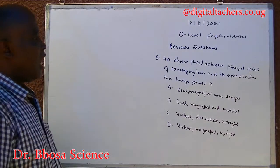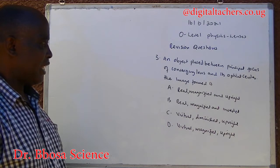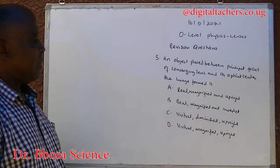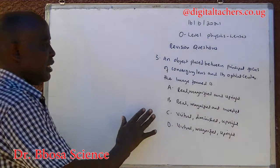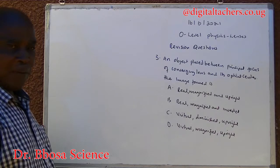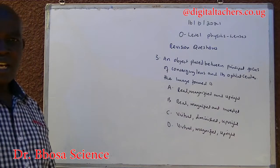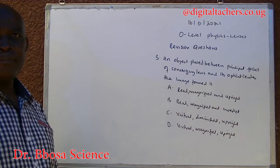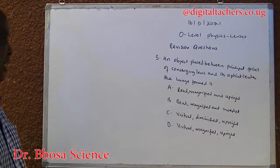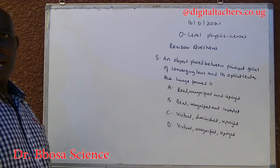Number three: an object placed between the principal focus of a converging lens and its optical center. The image formed is: A — real, magnified and upright; B — real, magnified and inverted; C — virtual, diminished and upright; D — virtual, magnified and upright.